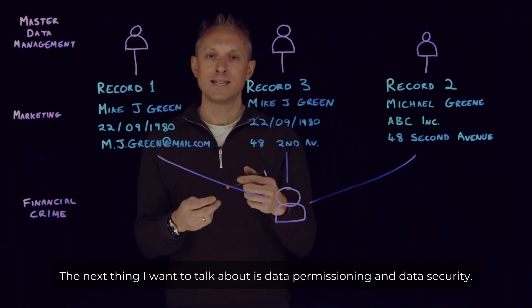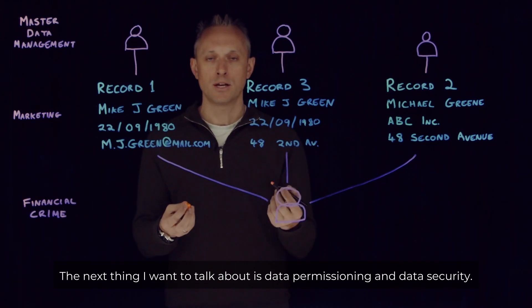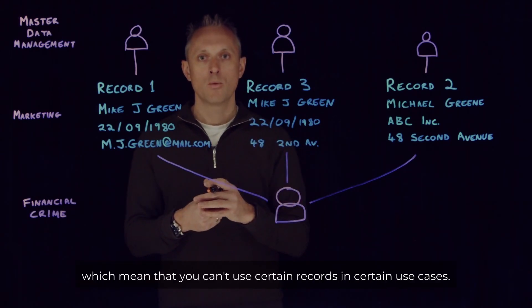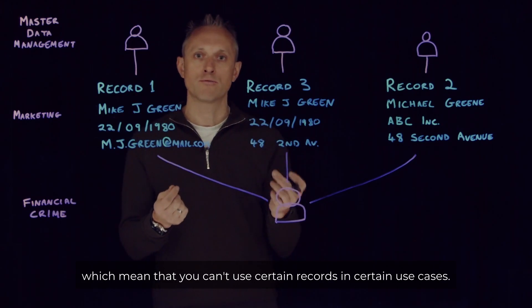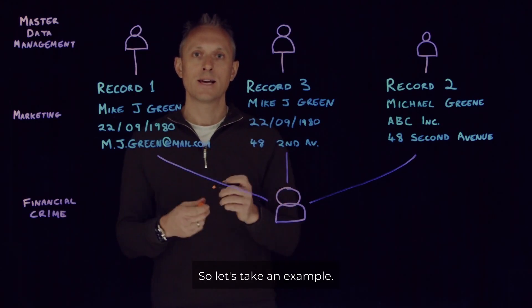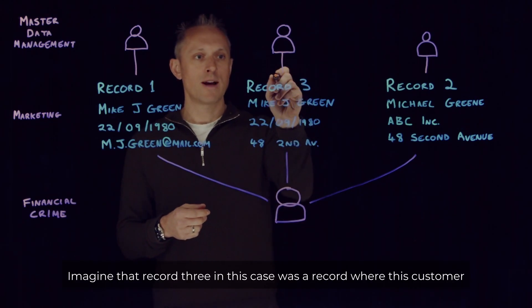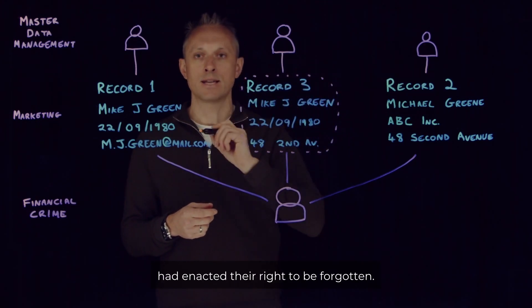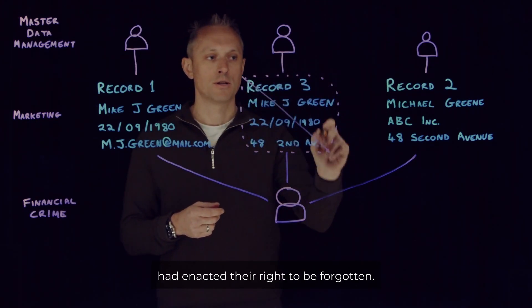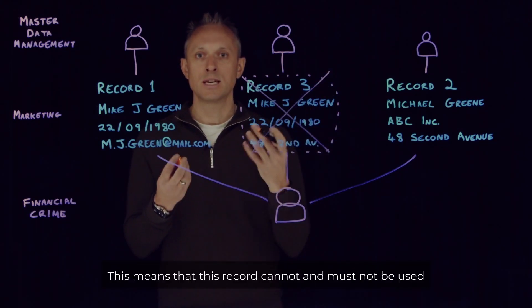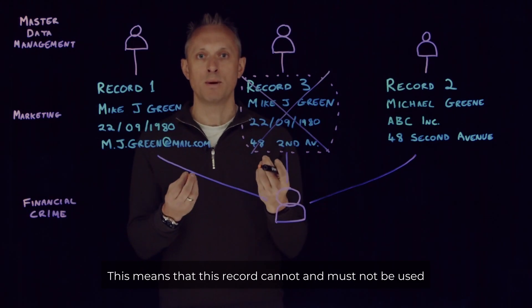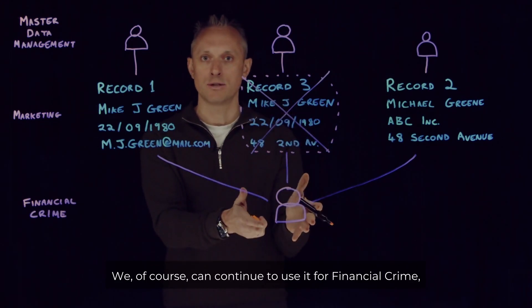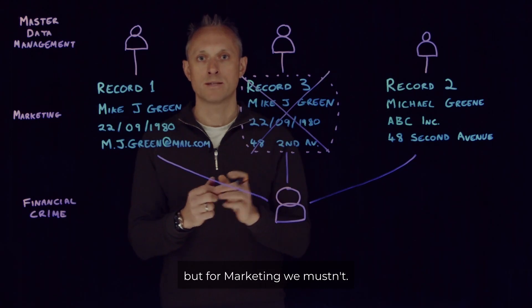The next thing I want to talk about is data permissioning and data security. As you'll be aware, there are things like GDPR regulations, which mean that you can't use certain records in certain use cases. Imagine that record three, in this case, was a record where this customer had enacted their right to be forgotten. This means that this record cannot and must not be used for a marketing use case. We can of course continue to use it for financial crime, but for marketing, we mustn't.